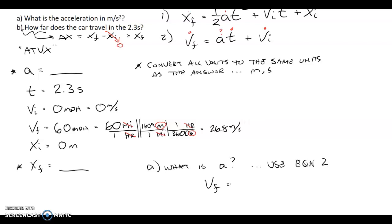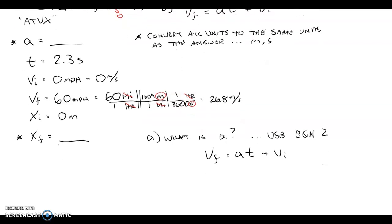I'm going to use equation two, which says that v final is equal to a t plus v initial. V final is 26.8 meters per second. Acceleration is unknown. My time is 2.3 seconds. And my initial velocity is 0 meters per second. So, I could throw that away. And to solve for a, I'm going to divide by 2.3 seconds.